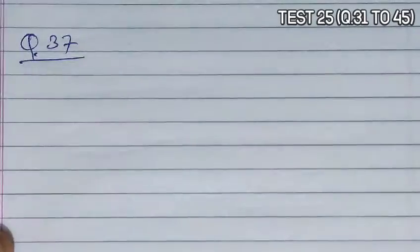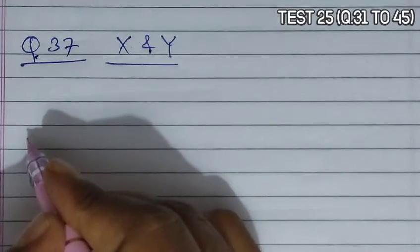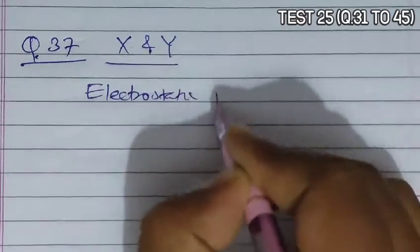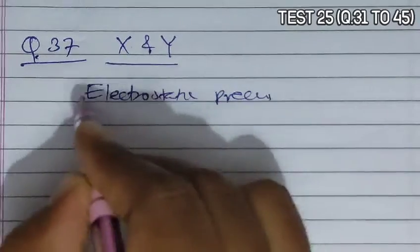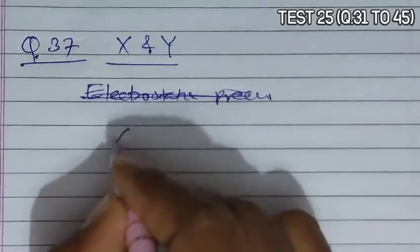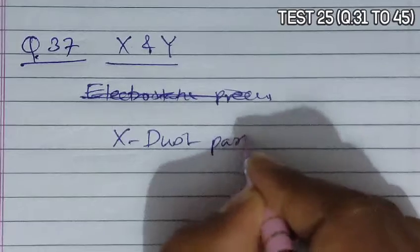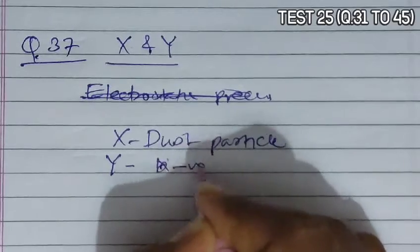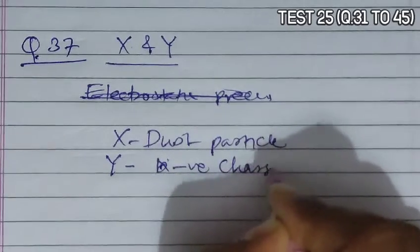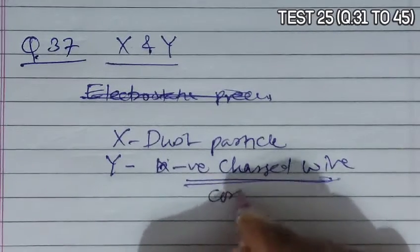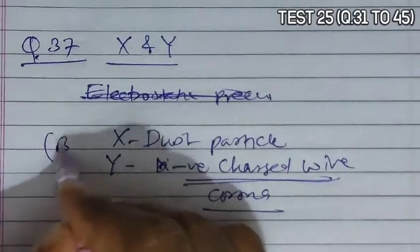Question 37 asks to identify X and Y from the figure. The figure shows an electrostatic precipitator. X represents dust particles, that is particulate matter, and Y represents a negatively charged wire. When it is given a high voltage, it will develop a corona. So according to this, B is the correct answer.